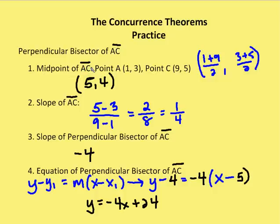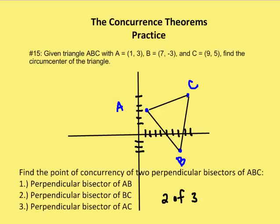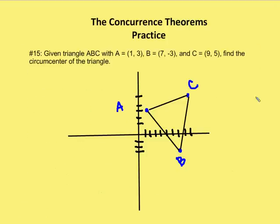First, I'm going to find the midpoint of AC, then the slope of AC, then the slope of the perpendicular bisector of AC, and then I'll use a point and slope to find the equation for the perpendicular bisector. We find the midpoint, then find the slope of AC because the perpendicular bisector has a slope which is the opposite reciprocal of AC, and then we find the equation of the line through the midpoint of AC.